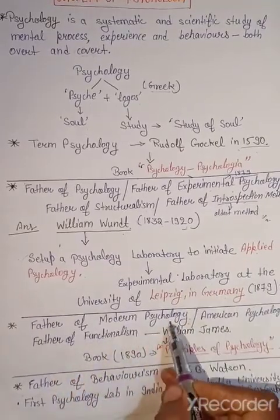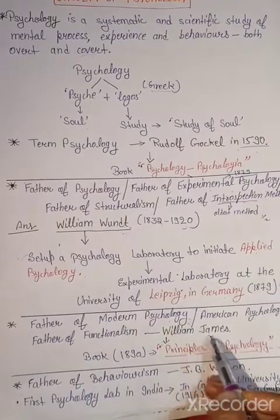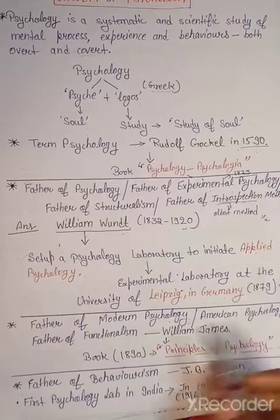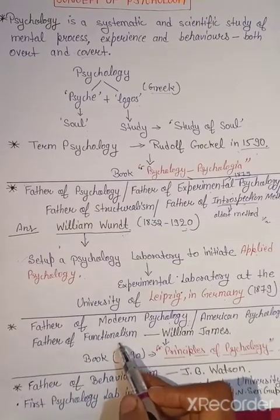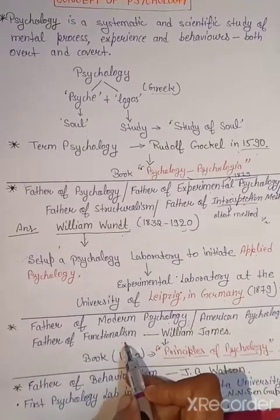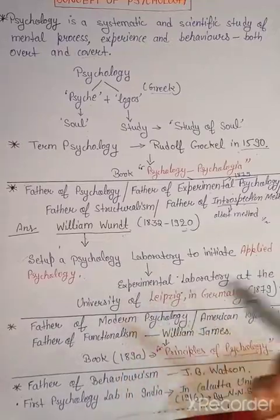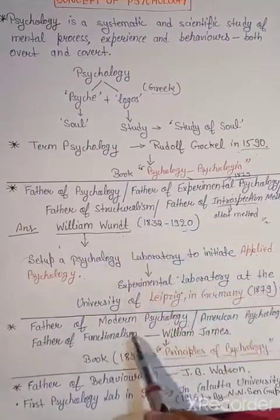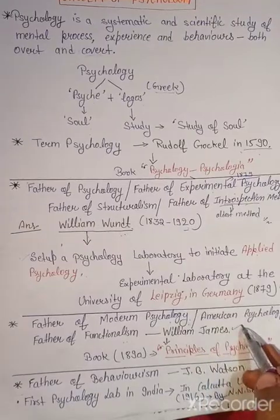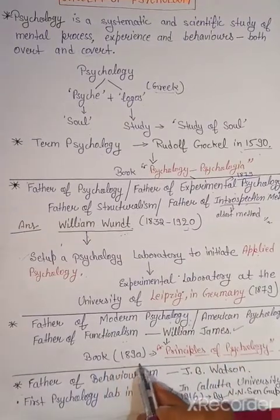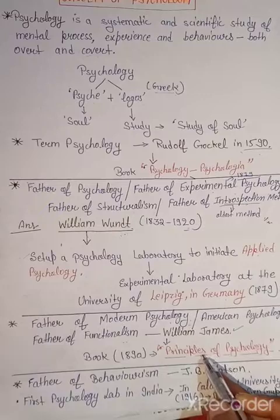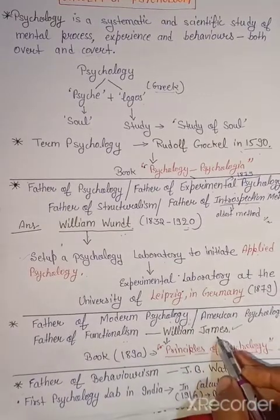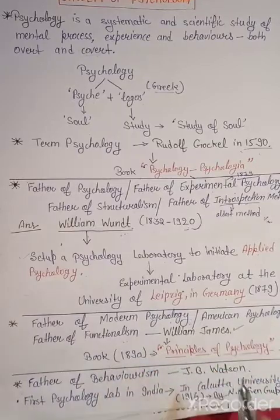अब father of modern psychology की बात कर लेते हैं — कौन थे? William James. इनको American psychology के father भी कहा जाता है, और father of functionalism भी — क्योंकि इन्होंने functionalism schools के बारे में बताया था. Structuralism William Wundt ने बताया था, और functionalism William James ने. इन्होंने 1890 में book लिखी थी जिसका नाम था 'Principles of Psychology.'